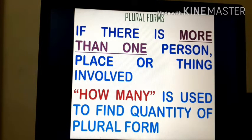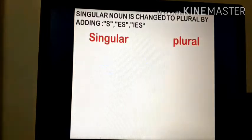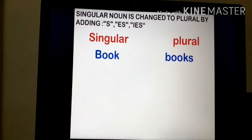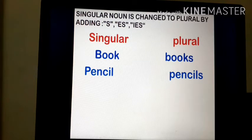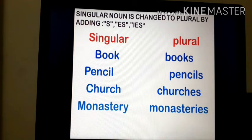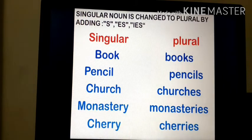If there is more than one person, place or thing involved, we call them plural forms. 'How many' is used to find the quantity of plural forms. Singular nouns are changed to plural by adding s, es or ies. For example: book becomes books, pencil becomes pencils, church becomes churches, monastery becomes monasteries, cherry becomes cherries.